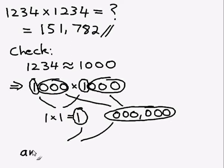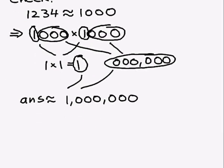So we have a one. And what I'm saying here is our answer should approximately equal one followed by six zeros, which is one million. Now the answer we got was—we didn't get a million. What we got was 151,782.